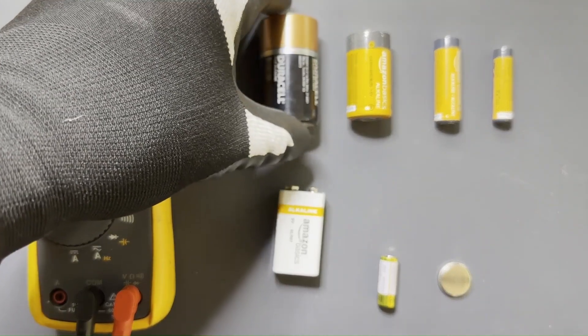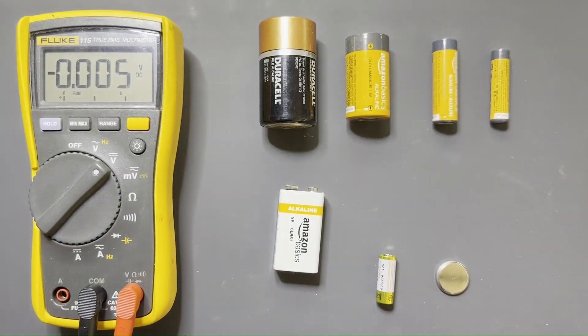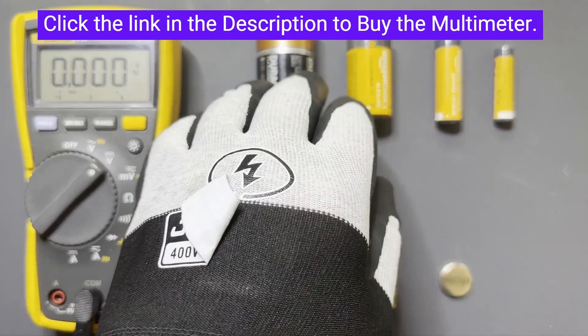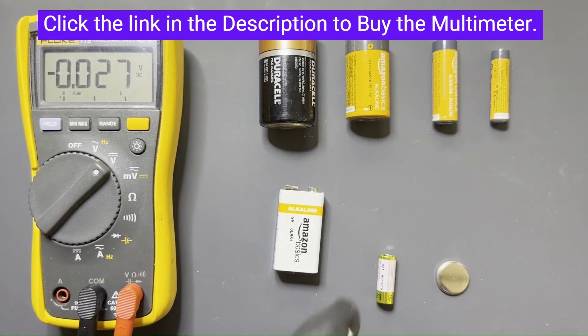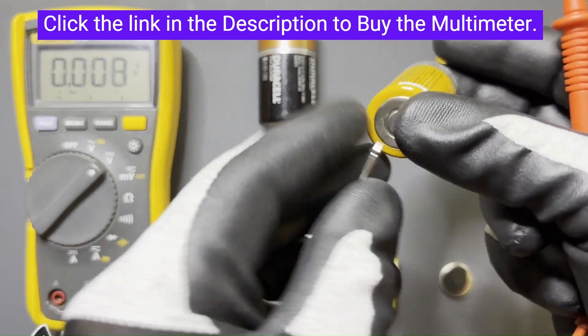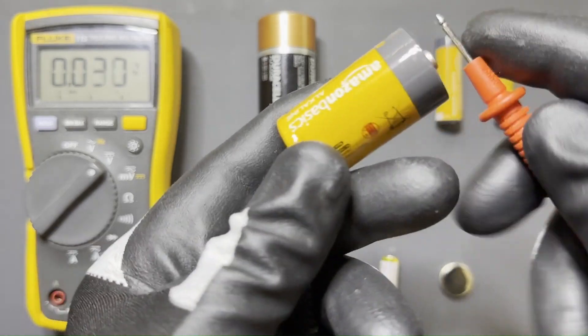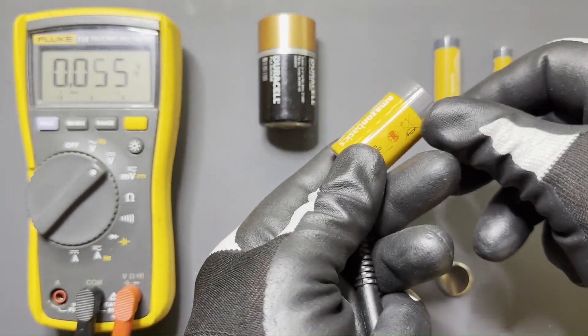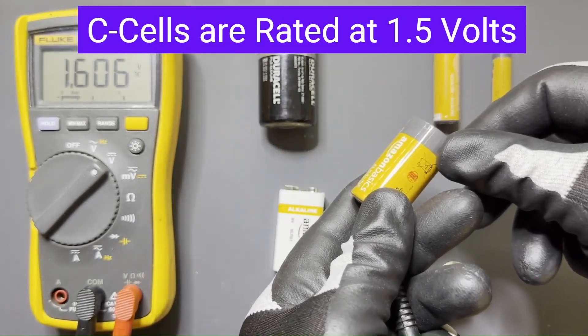That's just a little bit over its 1.5 volt rating. Honestly, if I'm going to put batteries in something that I expect to last a long time, I actually like to see it better than that - I'd like to see it around 1.515 or something like that. So this is a C cell here, reads 1.606. That's a good battery, that's a good fresh battery.